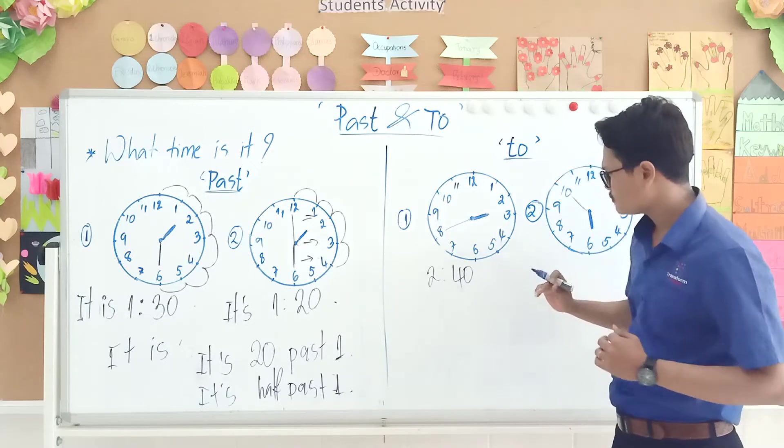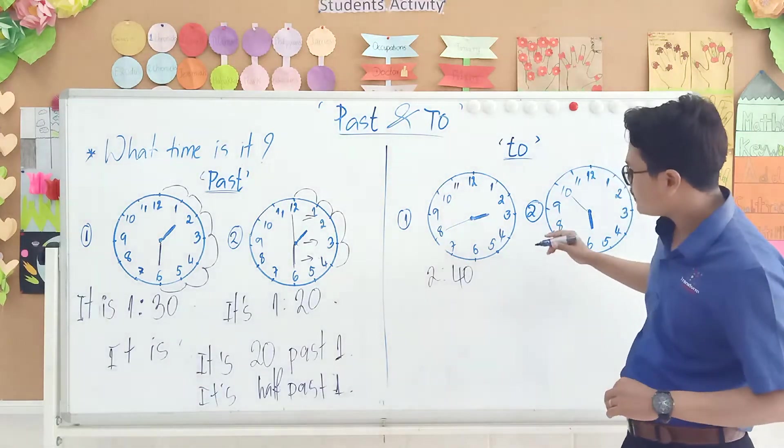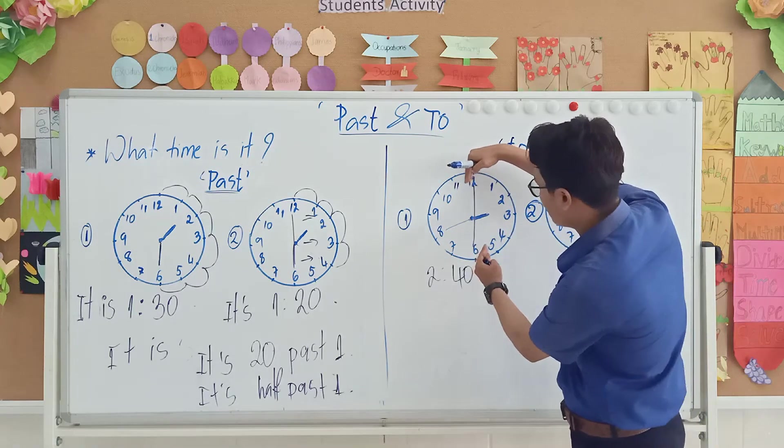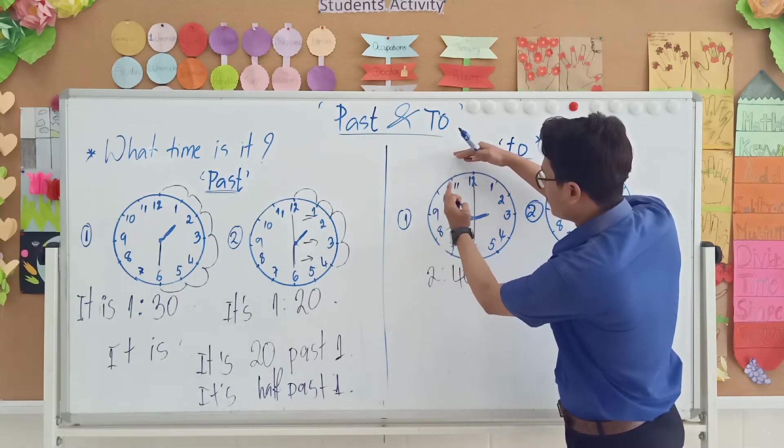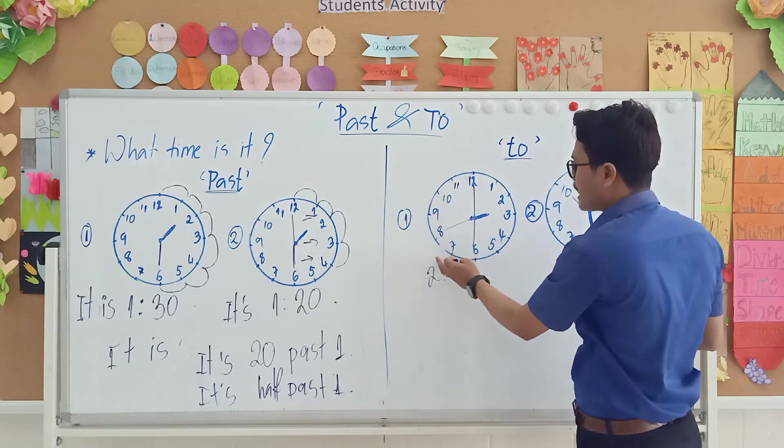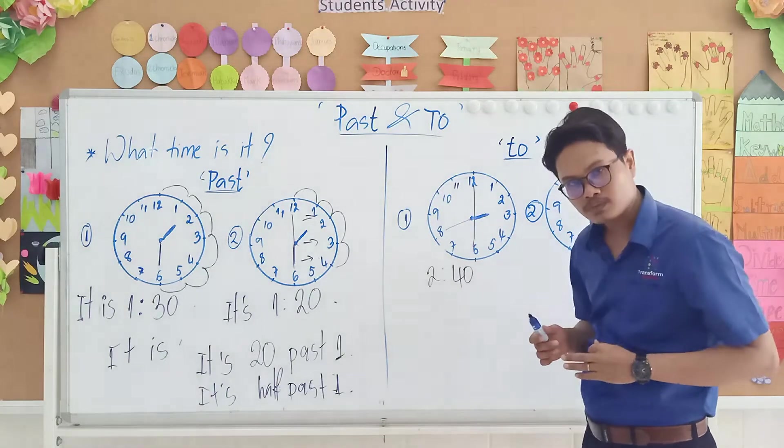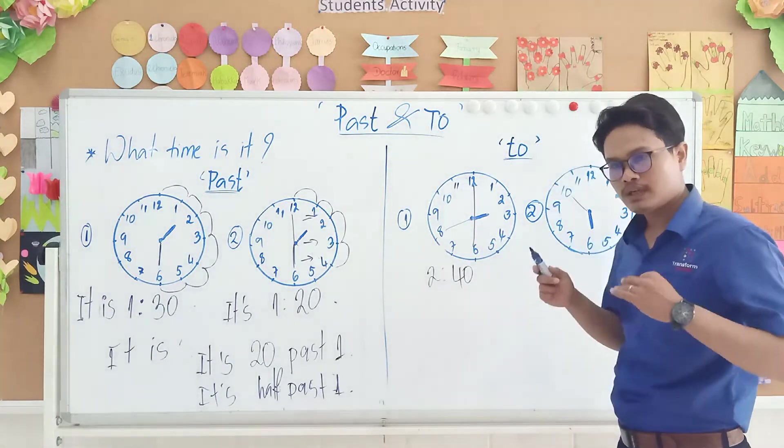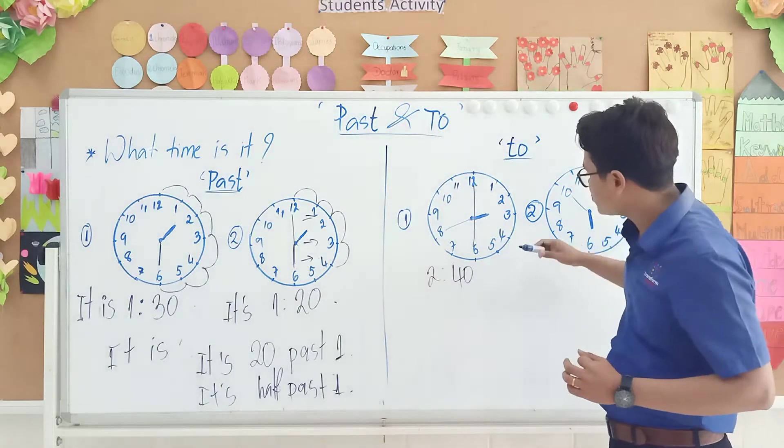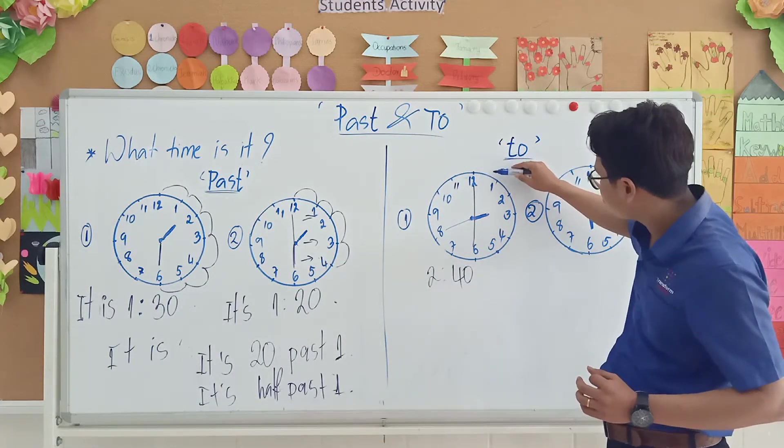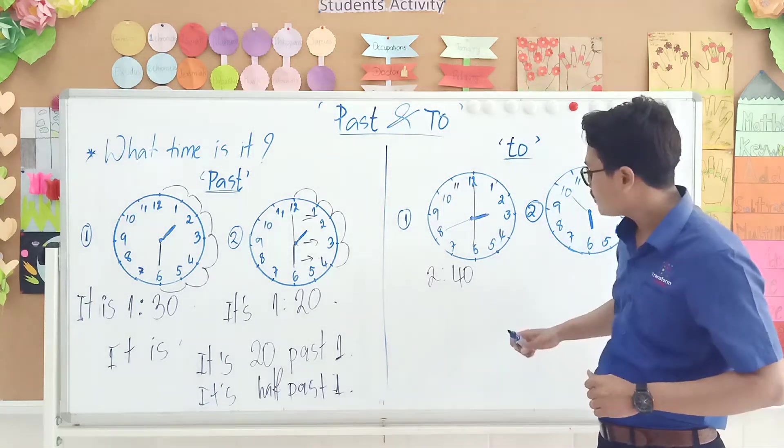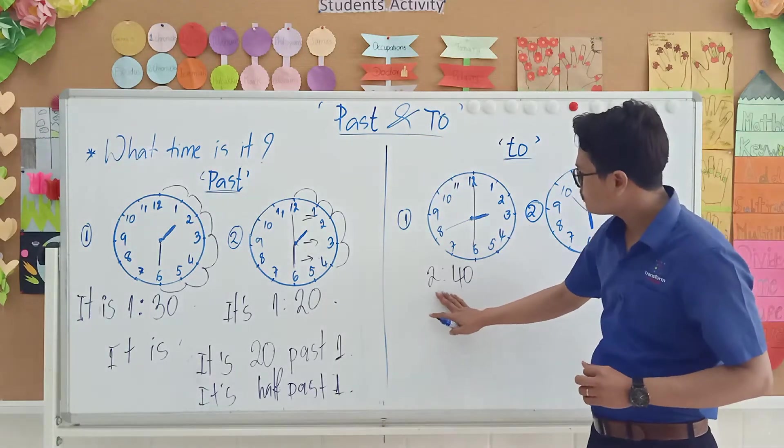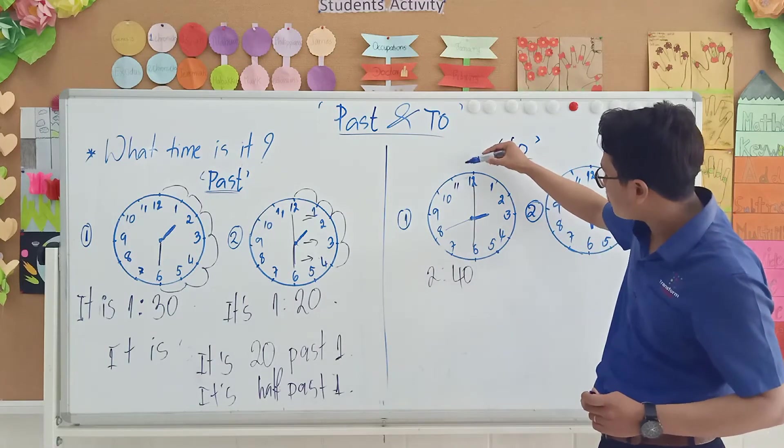So now, how to write with the word 'to'? I want to tell you that when you see the long hand stay on this side, when you see the long hand on this side, you need to use the word 'to'. So right now the long hand is here, so you need to use 'to'. But with 'to', you cannot count like normal. You must count backwards.